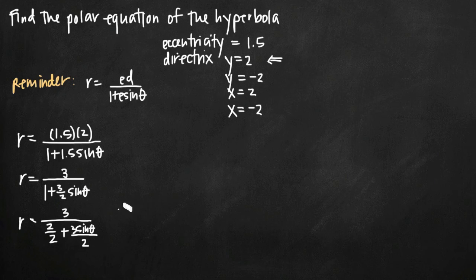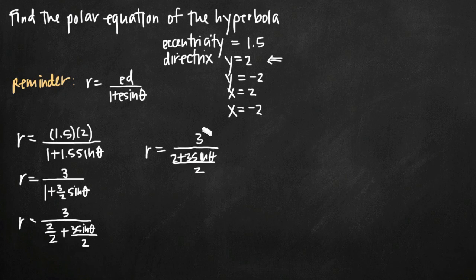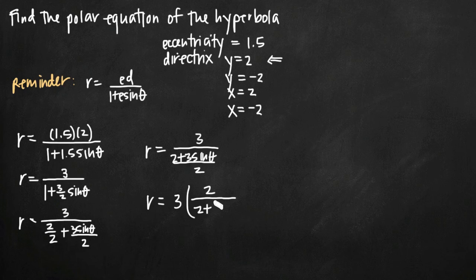Now we can combine the fractions in our denominator and we'll get r equals 3 over 2 plus 3 sine theta all over 2. And now instead of dividing 3 by this fraction, we can multiply 3 by the fraction's reciprocal. So we'll get 3 times the reciprocal, 2 over 2 plus 3 sine theta.